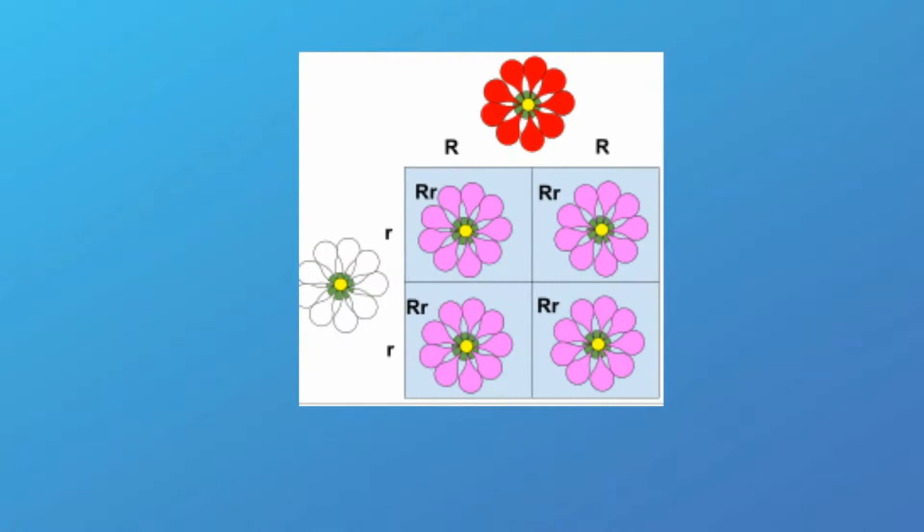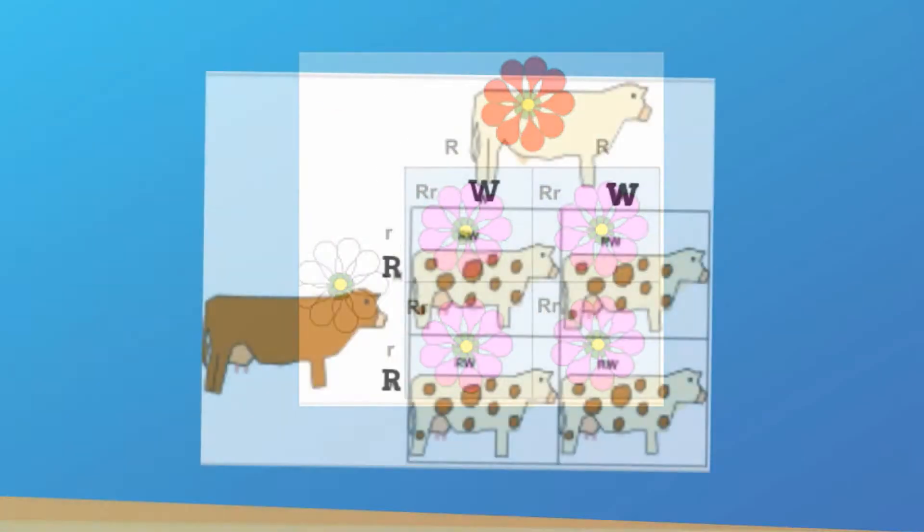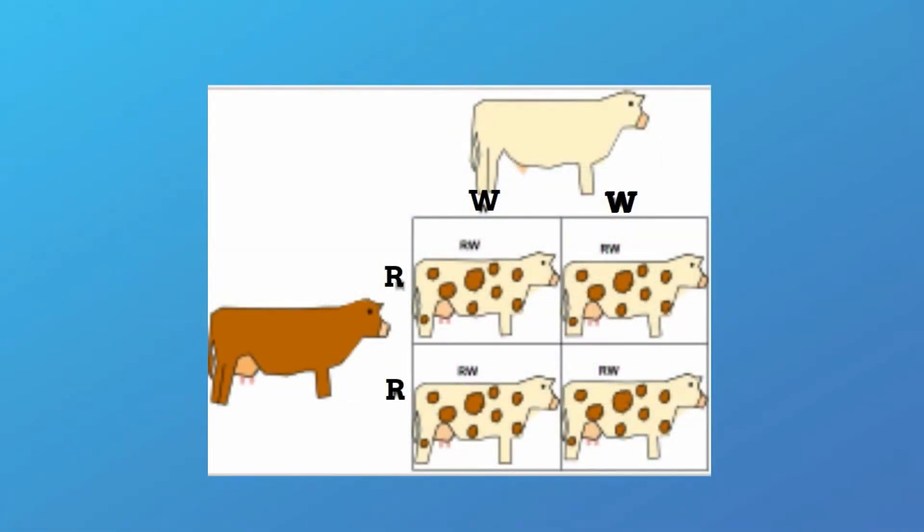When you cross a white and red flower, you get a pink flower. If you cross the pink flower, you can get a white, red, or even pink flower. Both alleles show up in the phenotype.